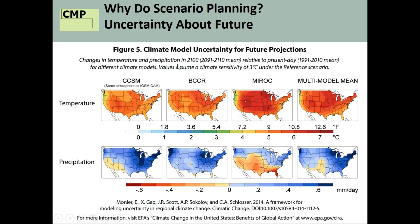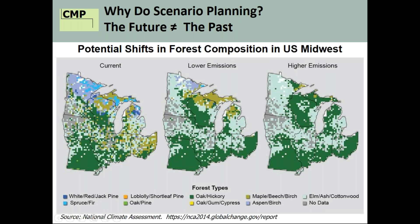Here's a slide showing four different global circulation models and their projections for temperature across the United States — same inputs, but four clearly different outputs. Here are four different outputs for precipitation changes. No one knows which model will be correct. Here's another example showing current forest types in the upper Midwest, what lower emissions might produce, and what higher emissions might show — just for one model. Using many different models gives a lot of uncertainty about what's really going to happen.